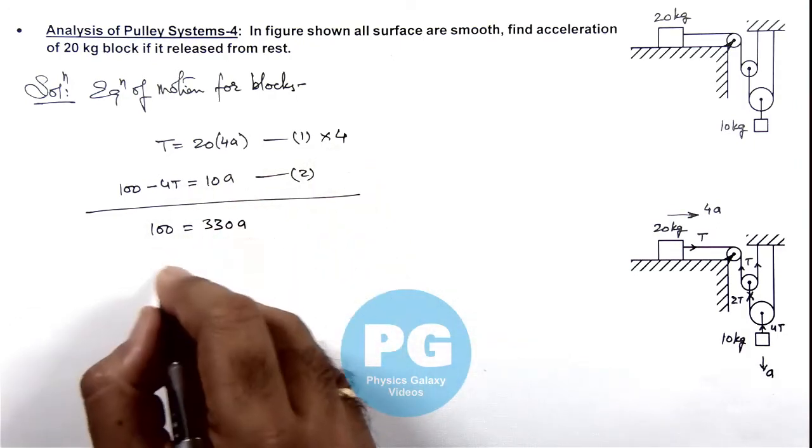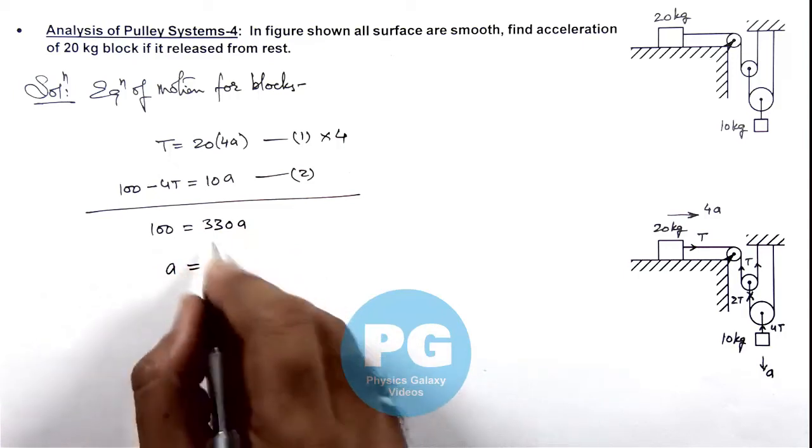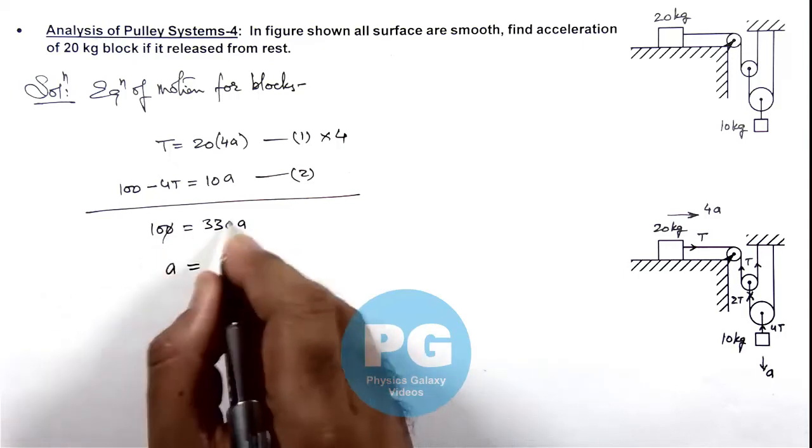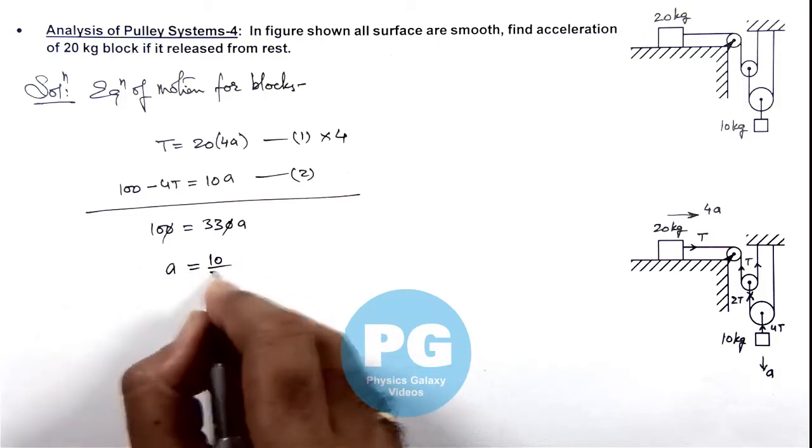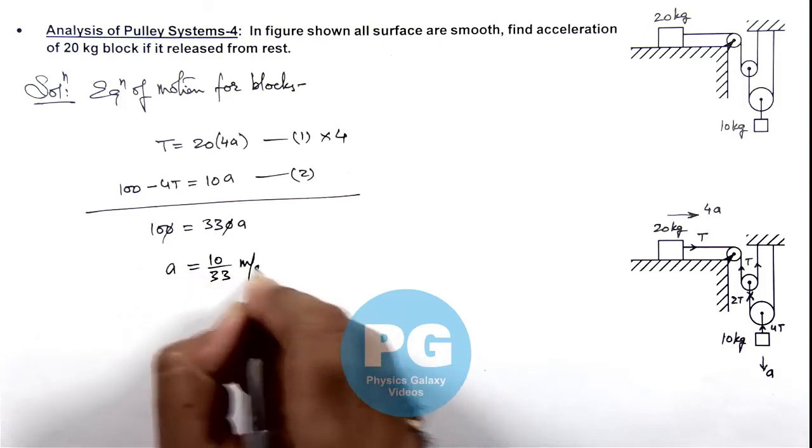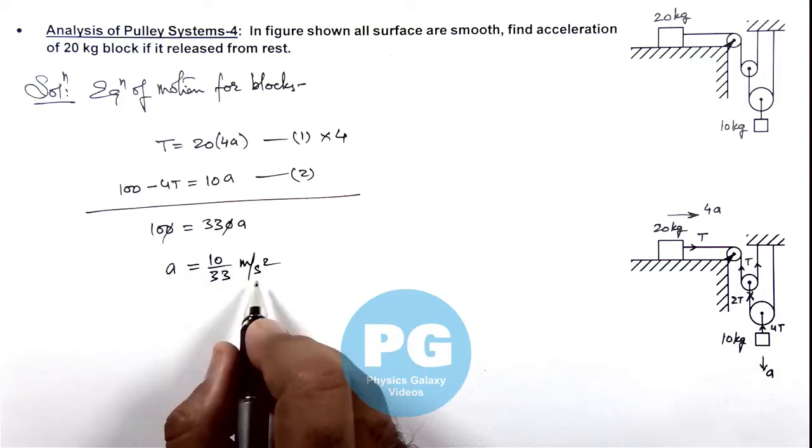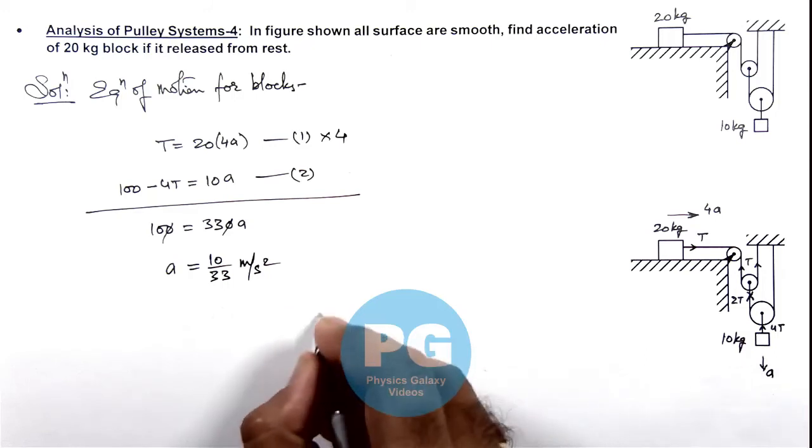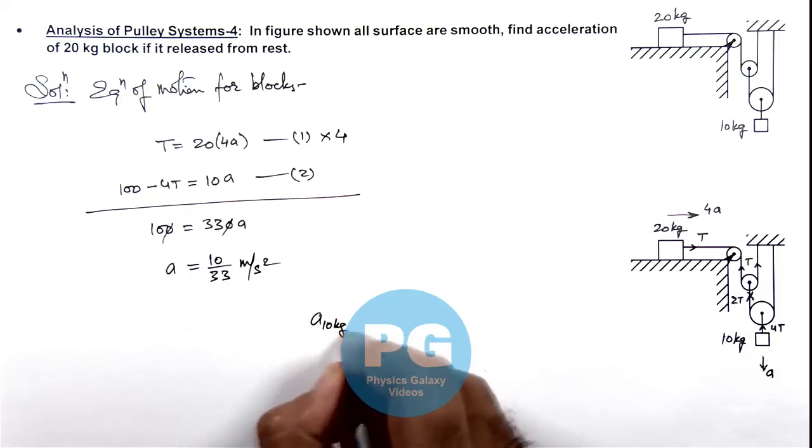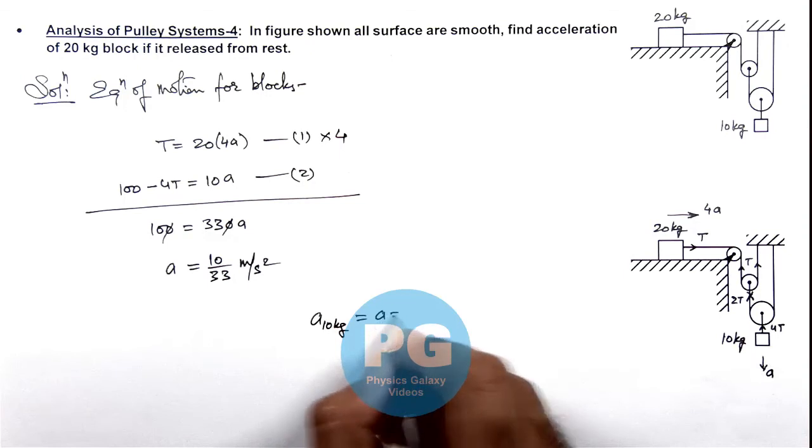So on simplifying we are getting the acceleration as 10 by 33 meter per second square. The acceleration of 10 kg block is ay, that is 10 by 33 meter per second square.